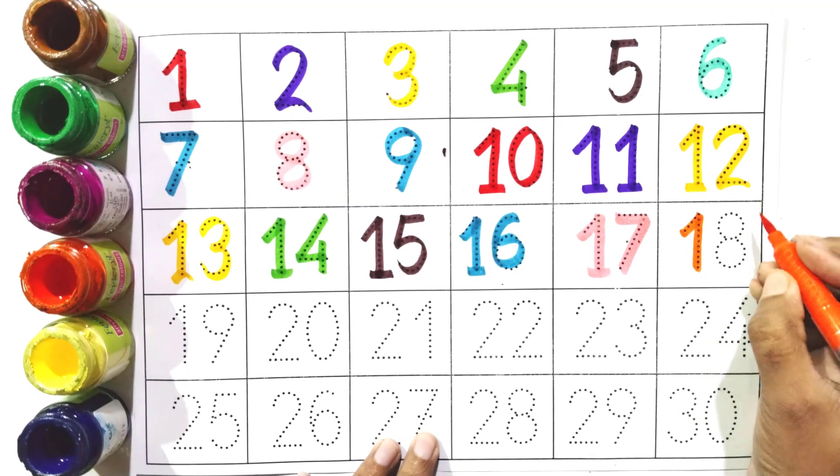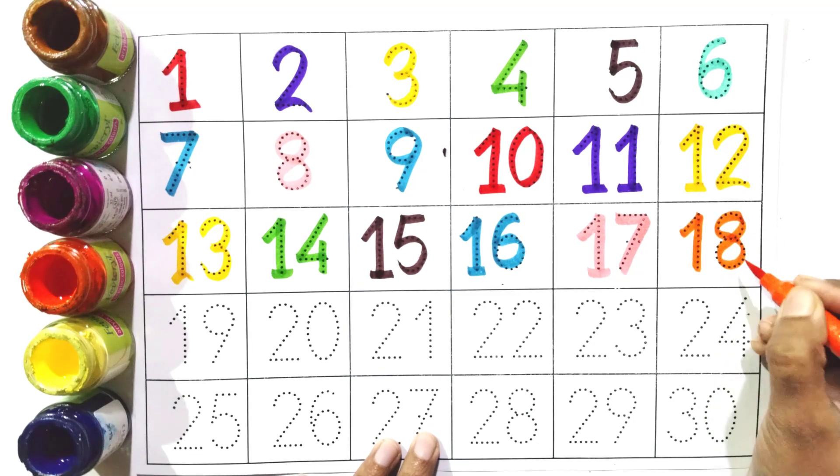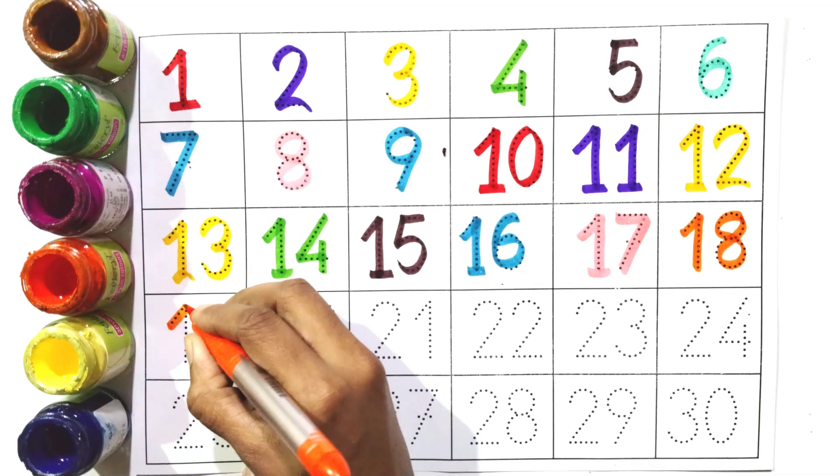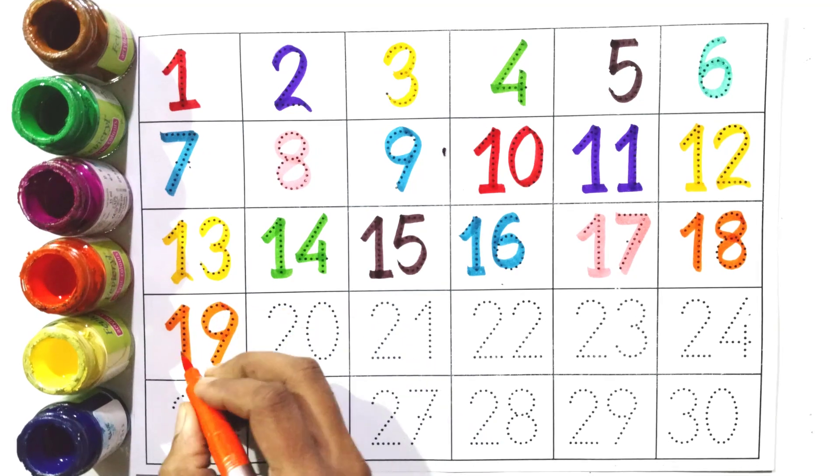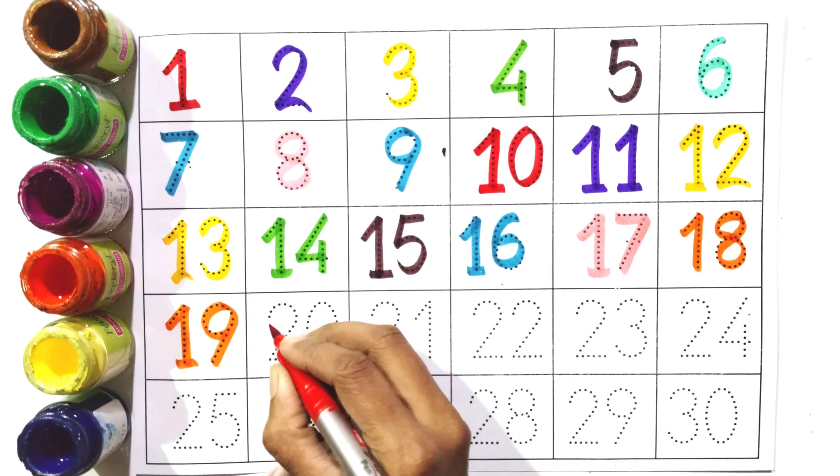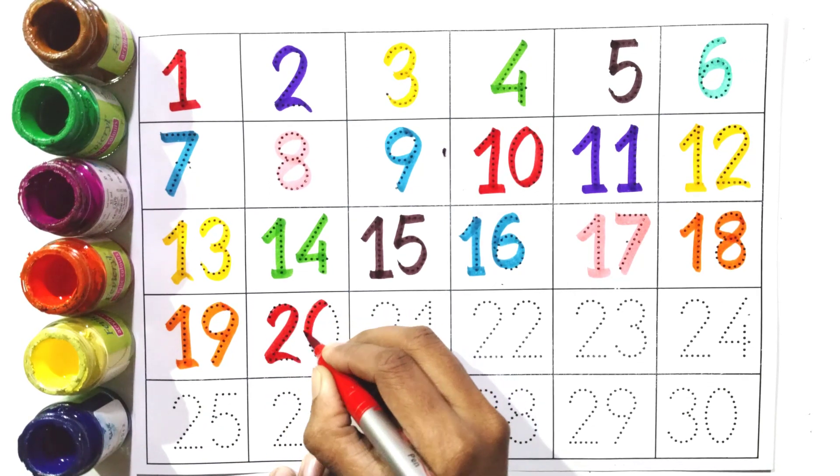One and eight, eighteen. One and nine, nineteen. Two and zero, twenty.